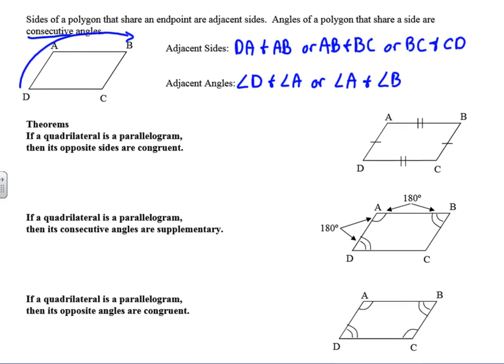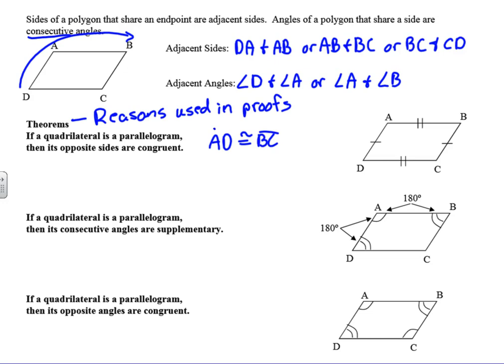We have a few theorems, and keep these in mind — they're going to be reasons used in proofs as well as properties we can apply. If a quadrilateral is a parallelogram, then its opposite sides are congruent. So in this diagram, AD is congruent to BC, and AB is congruent to DC. That theorem would be the reason.